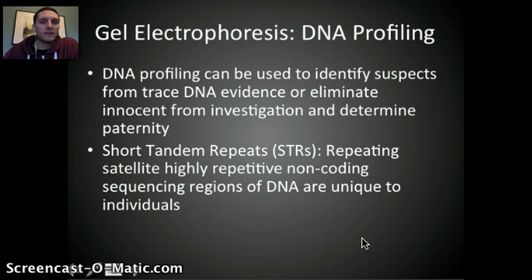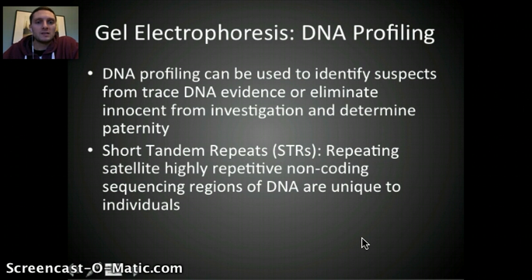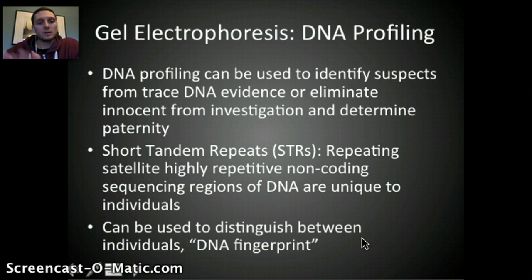Think about fingerprints on your fingers — these are unique to each person. The same idea applies with DNA profiling: each person, unless they're identical twins, has different DNA. By examining specific regions of DNA from different people, we can get an idea of different markers or bands using gel electrophoresis that distinguish one person from another. What we're looking at in humans are regions called short tandem repeats, or STRs — highly repetitive non-coding sequence regions that are unique to each individual. It's essentially a DNA fingerprint.